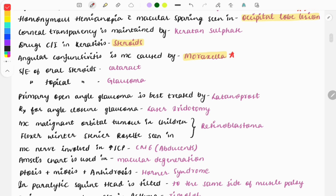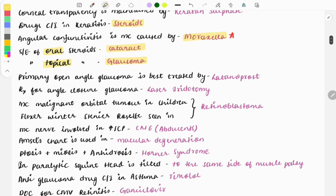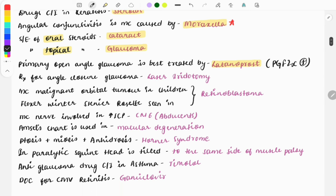Side effects of steroids: If there are oral steroids, the side effect is cataract. If we use topical steroids, we can see glaucoma. Primary open-angle glaucoma is best treated by latanoprost, and the mechanism is that it is a prostaglandin F2 alpha agonist.